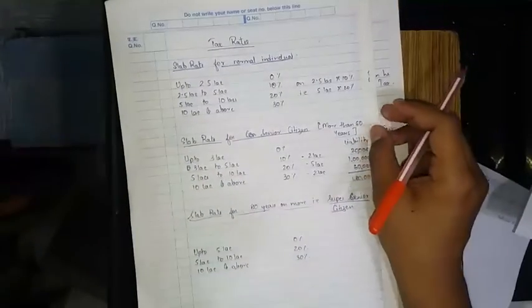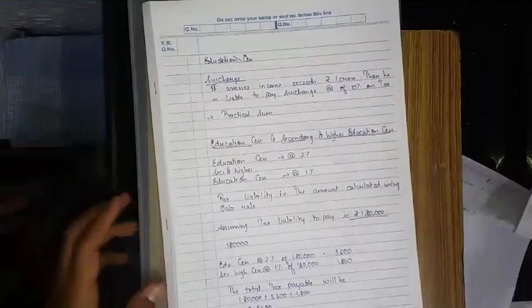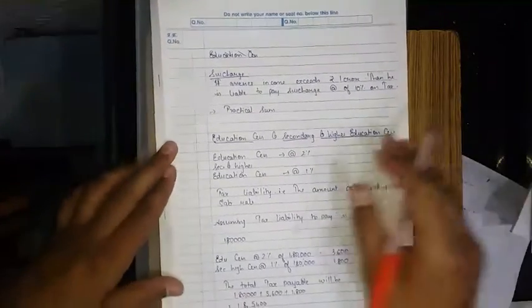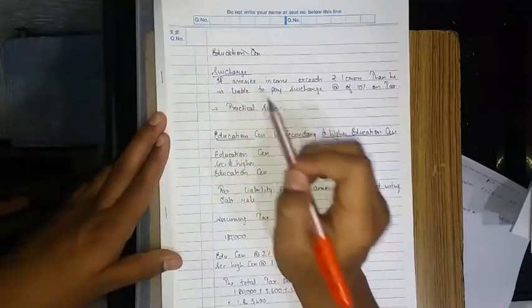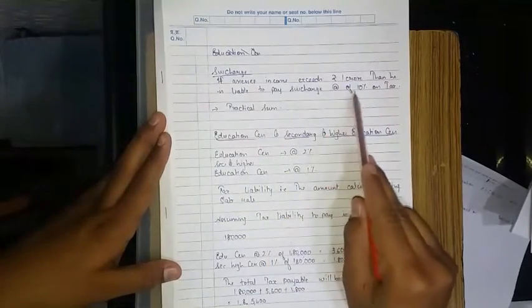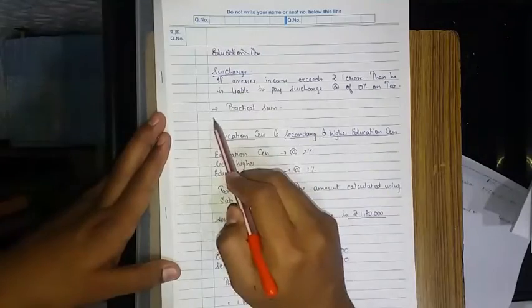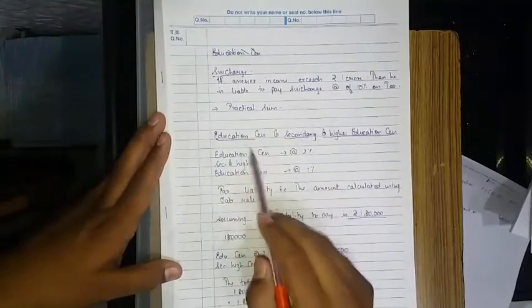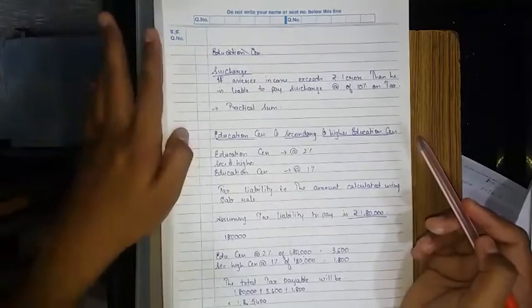Please take a screenshot of this also and write it in your book. After that, you also take a screenshot of this - write surcharge. If the SAC's income exceeds rupees 1 crore, then he is liable to pay surcharge at the rate of 10 percent of tax. That I will make you all understand in the practical sums.